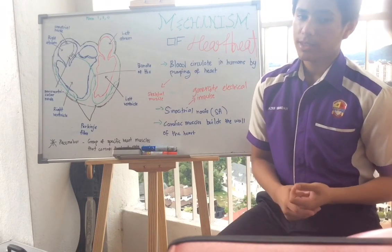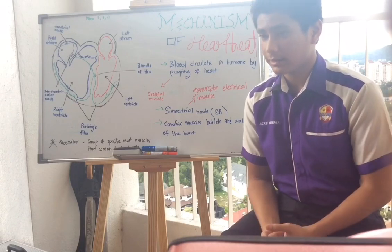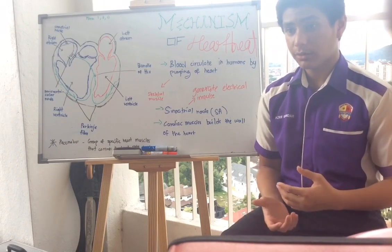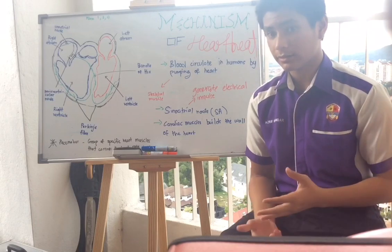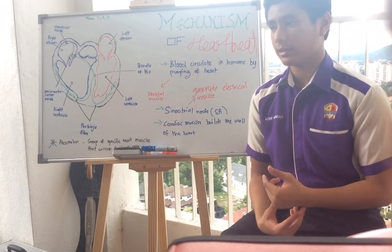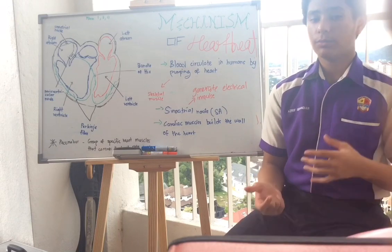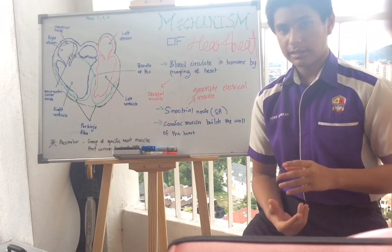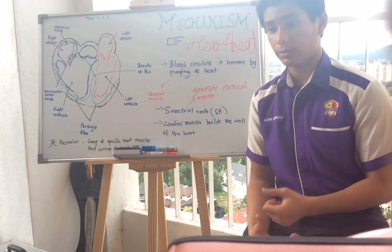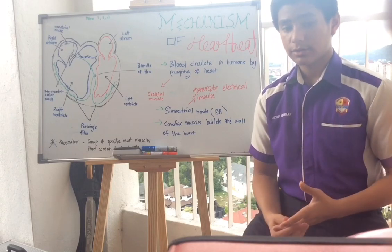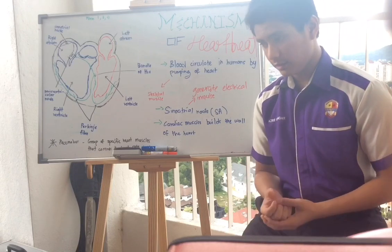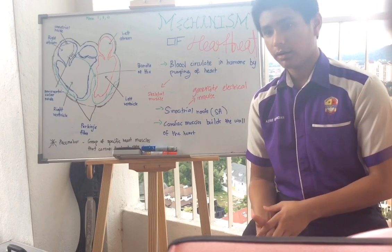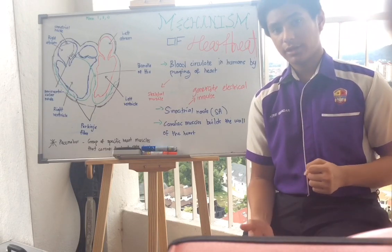Cardiac muscles are also myogenic, meaning the heart contracts and relaxes without receiving any signal or impulse from the nervous system. Moving on to blood circulation in humans — there is a force produced that enables blood to circulate, generated by the pumping of the heart and the contraction of skeletal muscles.